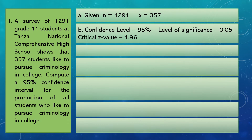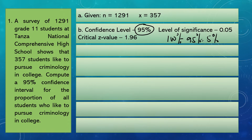To find the level of significance, we compute 100% minus 95%, which equals 5%, or 0.05 as a decimal. For the critical Z value, we look at the bottom of the T distribution table under 0.05, and we find that the critical Z value is 1.96. To find P-hat and Q-hat: P-hat equals X over N, so 357 divided by 1,291 gives us P-hat equal to 0.28. Q-hat equals 1 minus 0.28, which is 0.72.